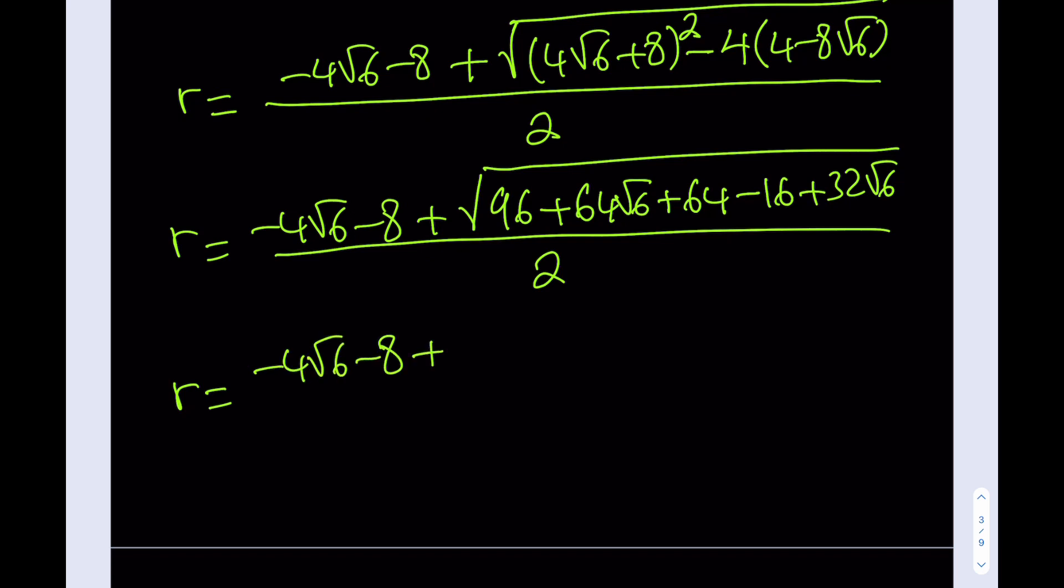Minus 8 plus, now inside the radical let's do some simplification. 64 - 16 is equal to 48. 96 + 48 is equal to what? 144. That's nice, I like that. 64√6 + 32√6 is going to make 96√6. That's also good. Not super good, but that's okay. Divided by 2. Now let's simplify this.